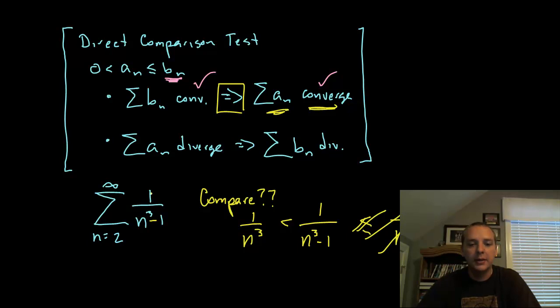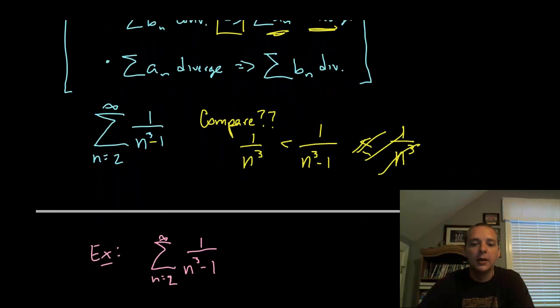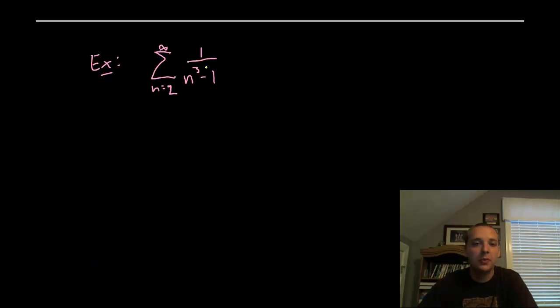So I much prefer the limit comparison test because notice there is no needed relationship between A and B. They just both have to be positive. So that is a fantastic idea. So anyway, let's try our first example. We will actually start with that simple one that we just were working on here.